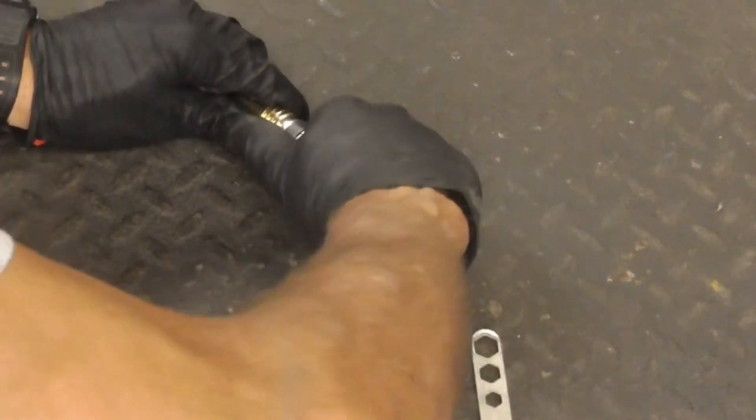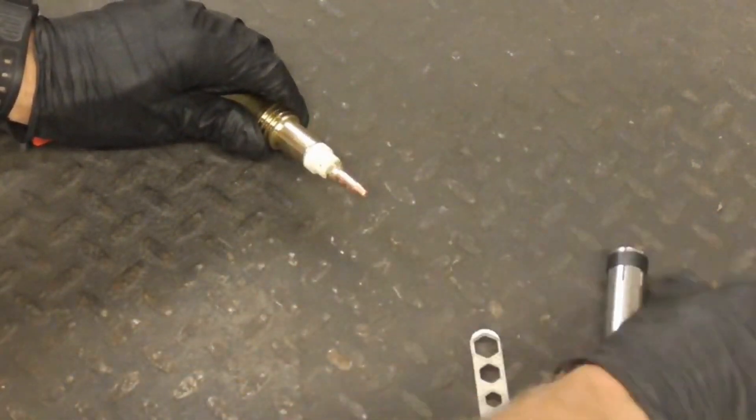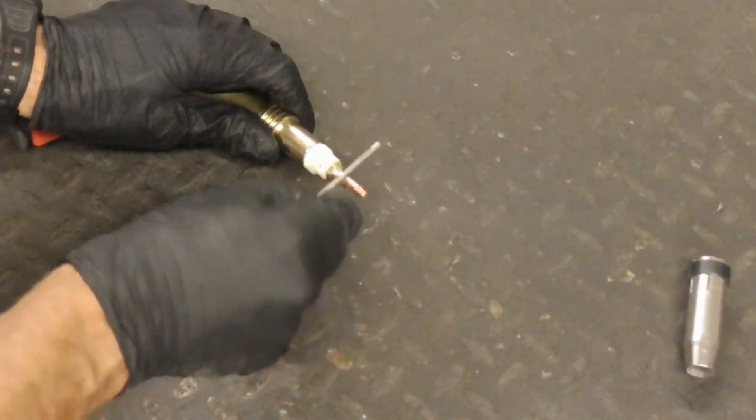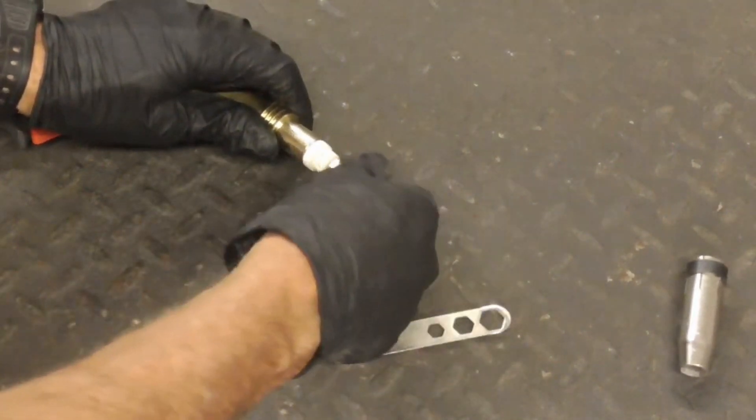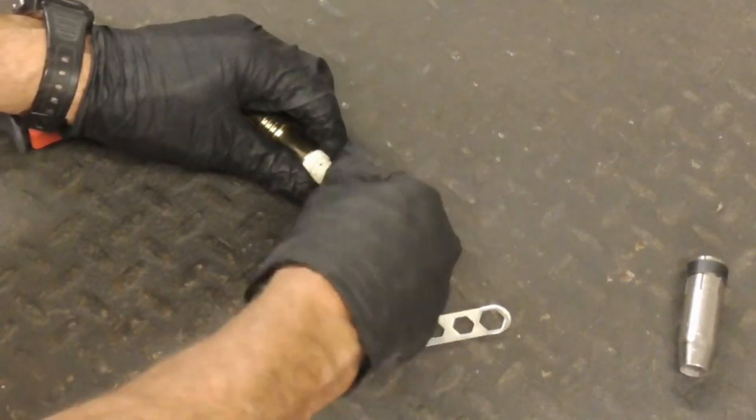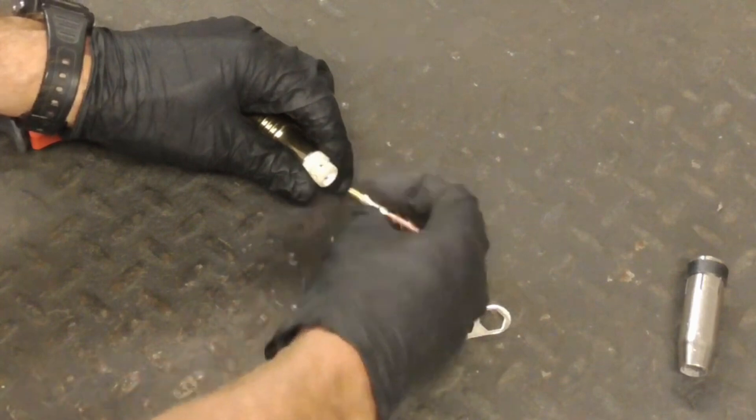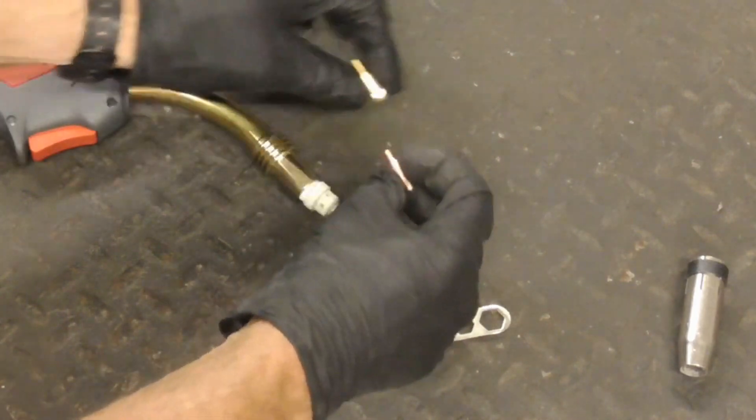Next, remove the end parts. This guy slips off. Use the wrench that comes with the welder. And these come apart too.